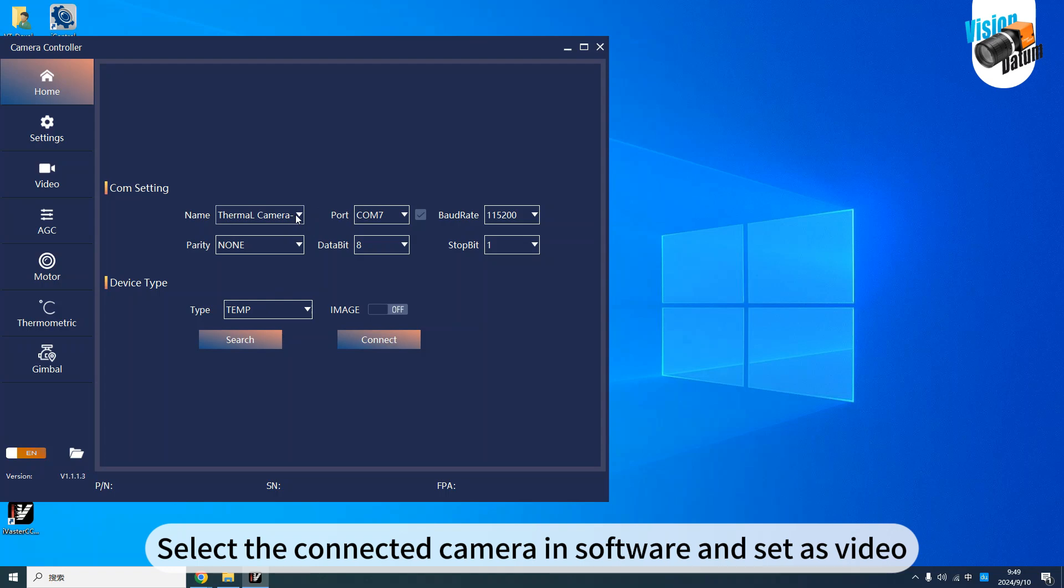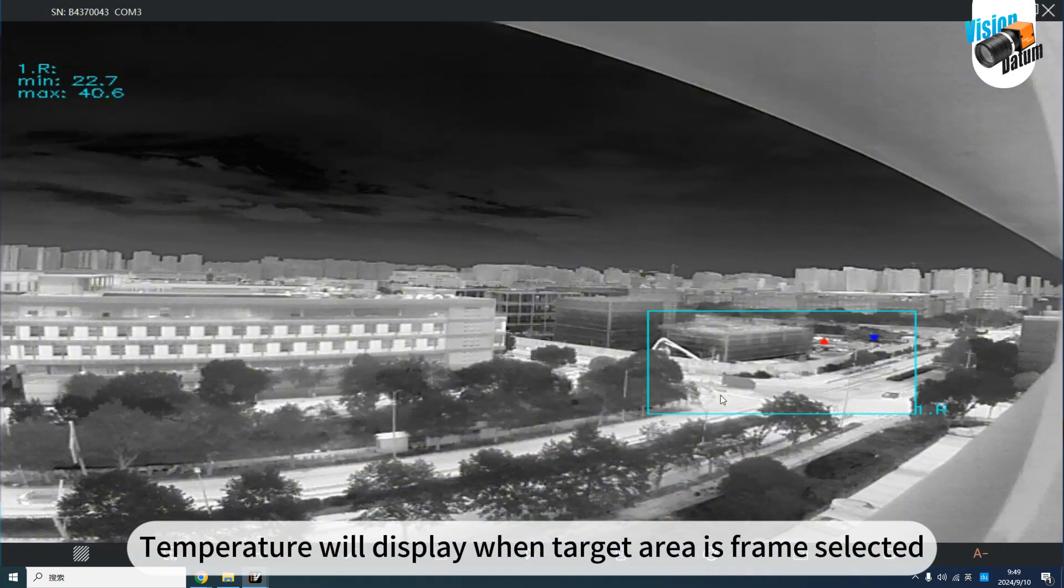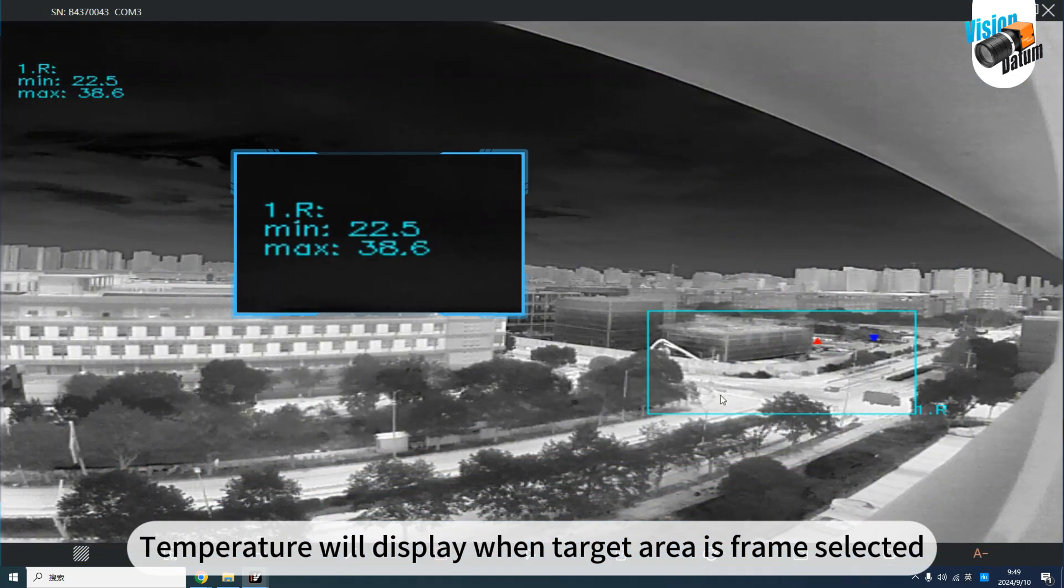Select the connected camera in software and set as video. Click Connect to capture the image. Temperature will display when target area is frame selected.